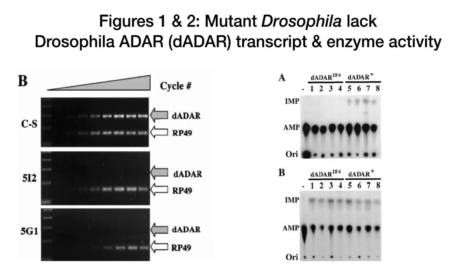So that's background for the paper. What they're doing is looking at Drosophila that lack the ADAR — adenosine deaminase — enzyme, so these flies cannot do this deamination reaction. First they show, using quantitative PCR, the amount of ADAR transcript present in wild-type flies as well as flies with two different mutations. In wild-type you see increasing amplification of the Drosophila ADAR transcript, along with RP49 as a standard housekeeping transcript. In both mutant versions, you do not get any Drosophila ADAR mRNA being made — no matter how many PCR cycles you run, you can't amplify RNA that wasn't made in the first place.